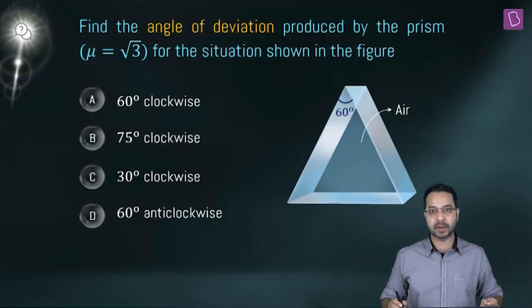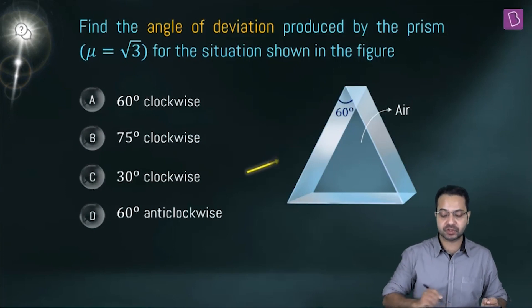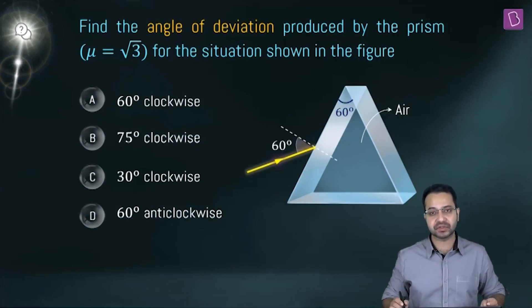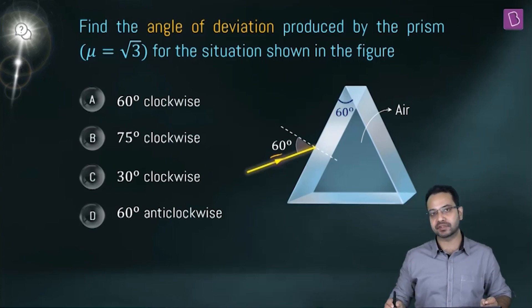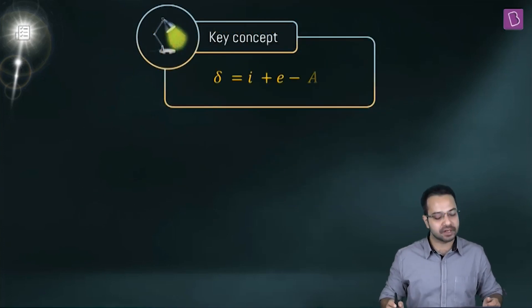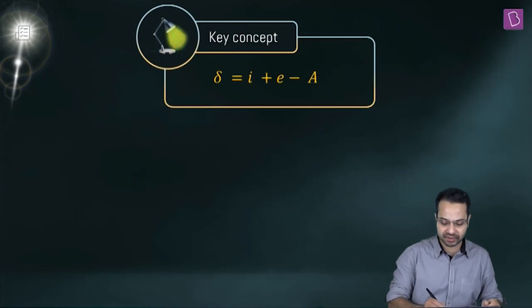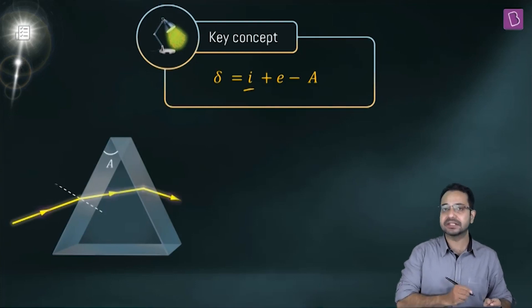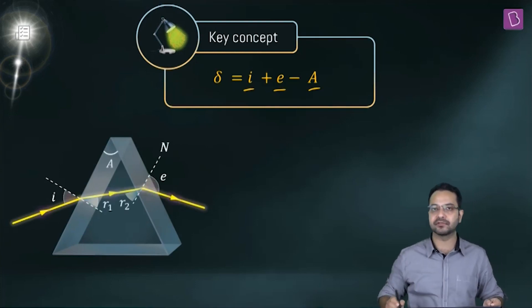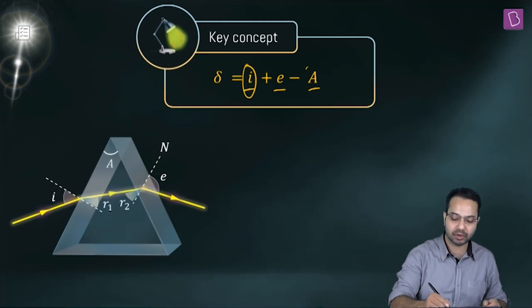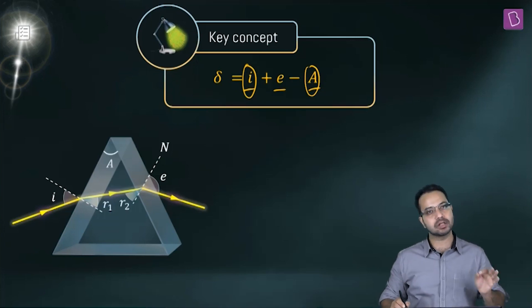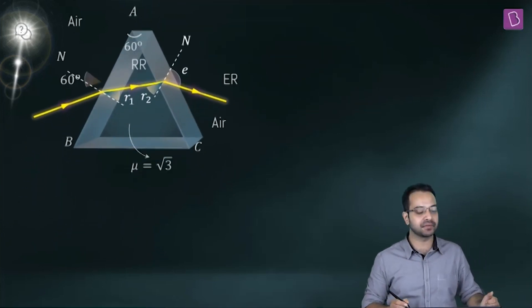Find the angle of deviation produced by the prism where μ = √3 for the situation shown. The refractive index of the prism is √3, surrounding is air, angle of prism is 60°, and light is incident at 60° on one face. The key concept: angle of deviation δ = i + e − A. We know i and A, so we need to find e.